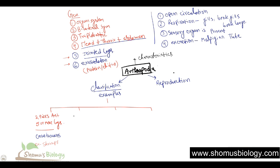The second group has three pairs of legs and one or two pairs of wings. This is a typical example of insects. Examples include butterfly, moth, and praying mantis.